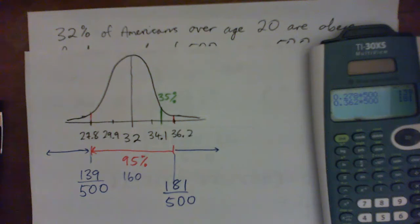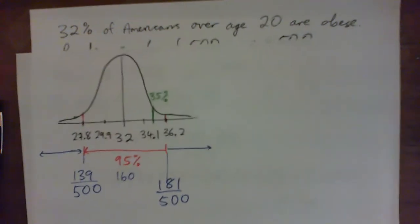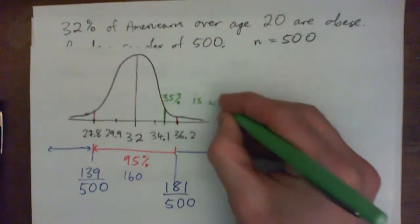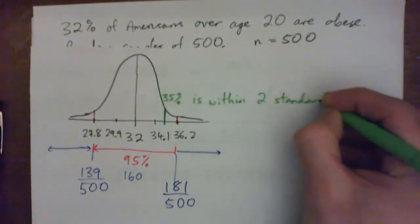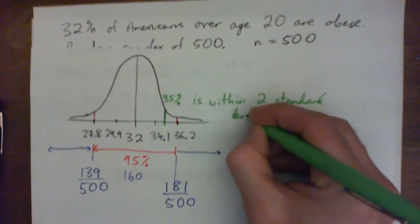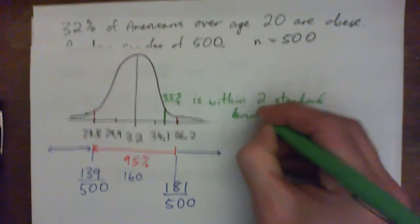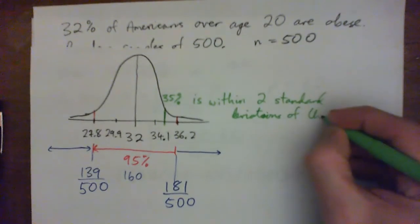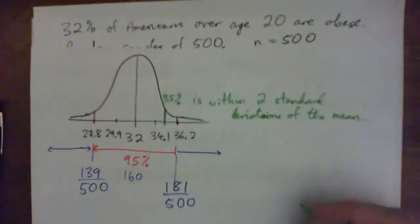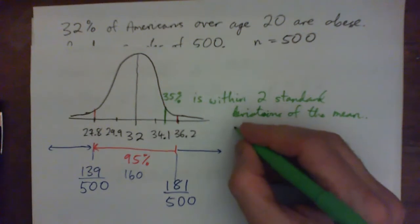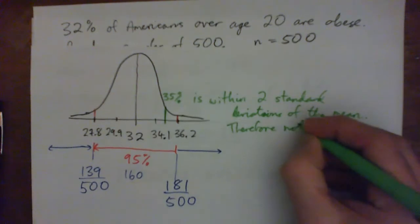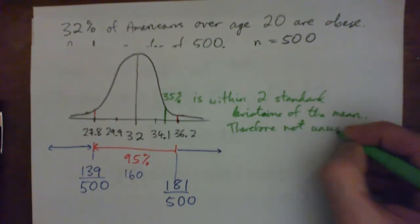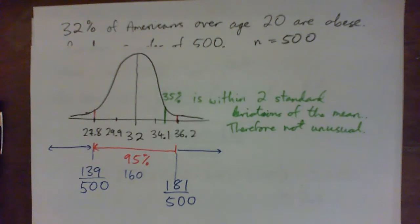You're done. Because 35% is within two standard deviations of the mean, and so it is not, so therefore it is usual. So therefore not unusual. Make sense? And that's all. So doing the bell graph would have answered my question immediately.